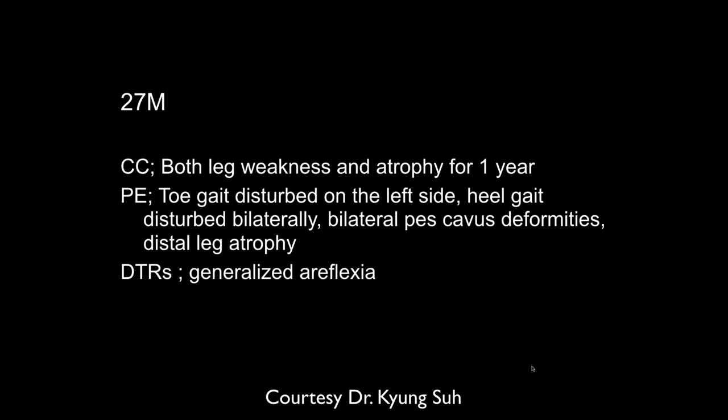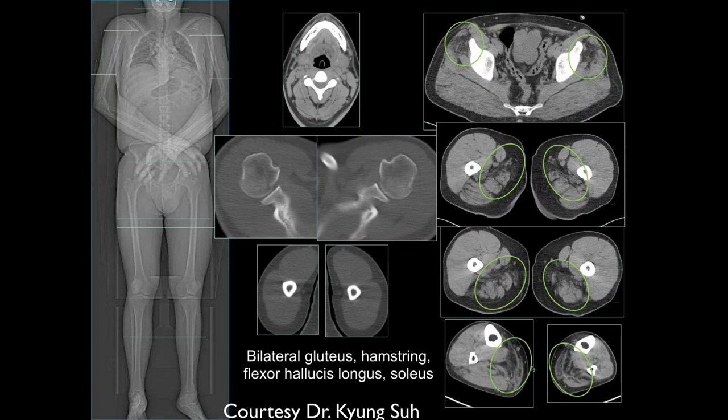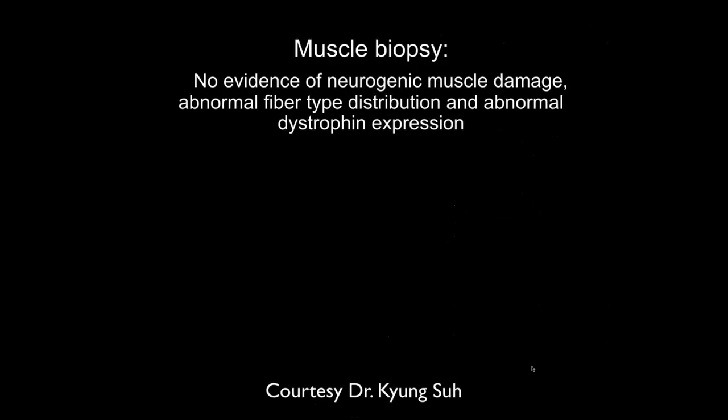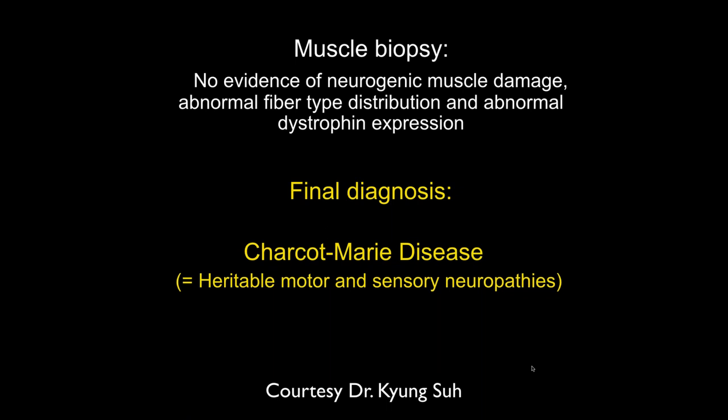A 27-year-old male with bilateral leg weakness and atrophy for one year, toe gait disturbed on the left, heel gait disturbed bilaterally, bilateral pes cavus deformities, distal leg atrophy, and generalized areflexia. Imaging shows atrophy of the adductors, hamstrings, soleus, and gastrocnemius. Biopsy showed no evidence of neurogenic muscle damage — abnormal fiber type distribution and abnormal protein expression. Interestingly, Charcot-Marie-Tooth disease really is a neurogenic disorder.